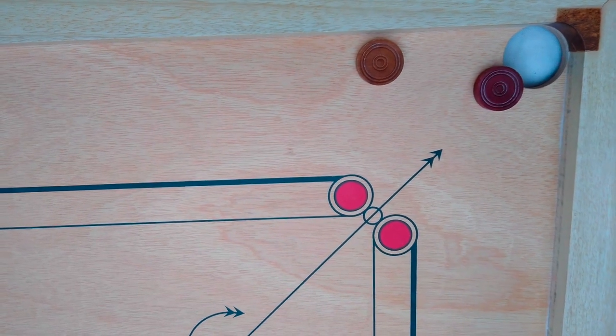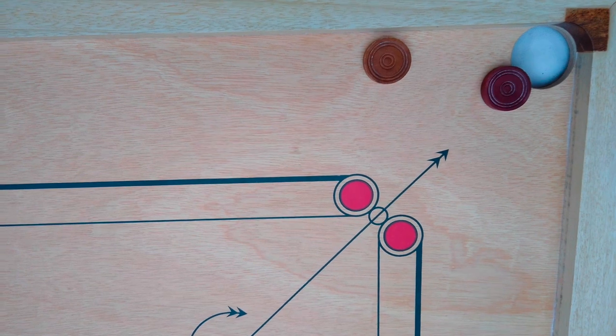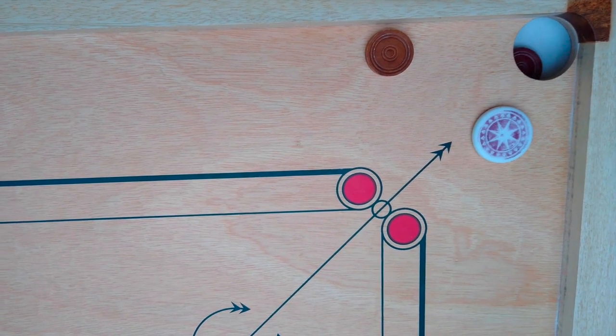Once you pocket the queen, you must immediately cover the queen by pocketing one of your own carrom men.